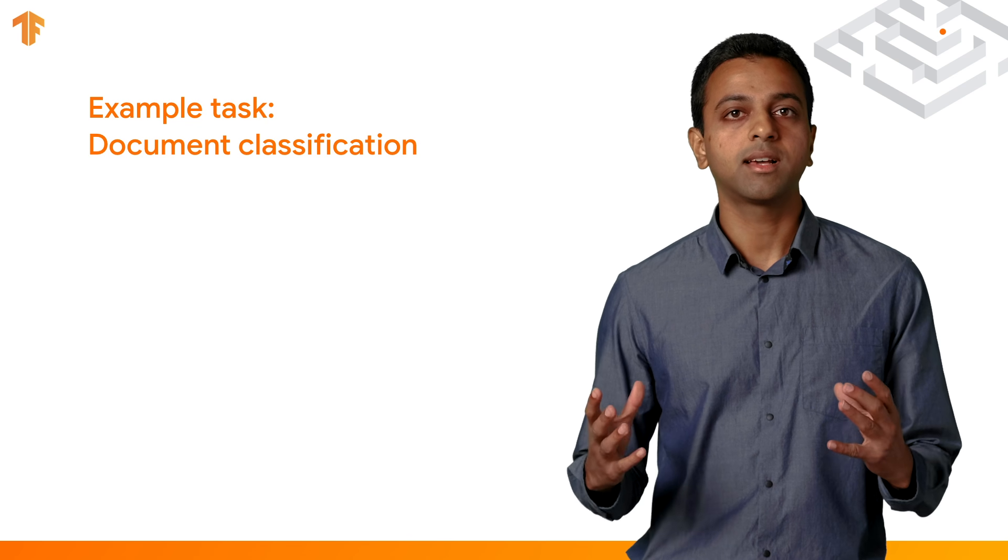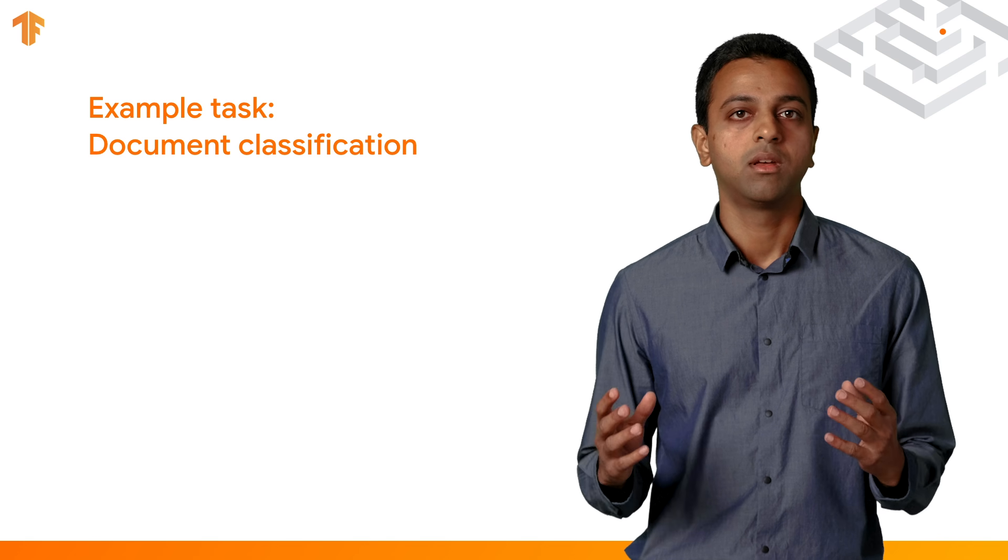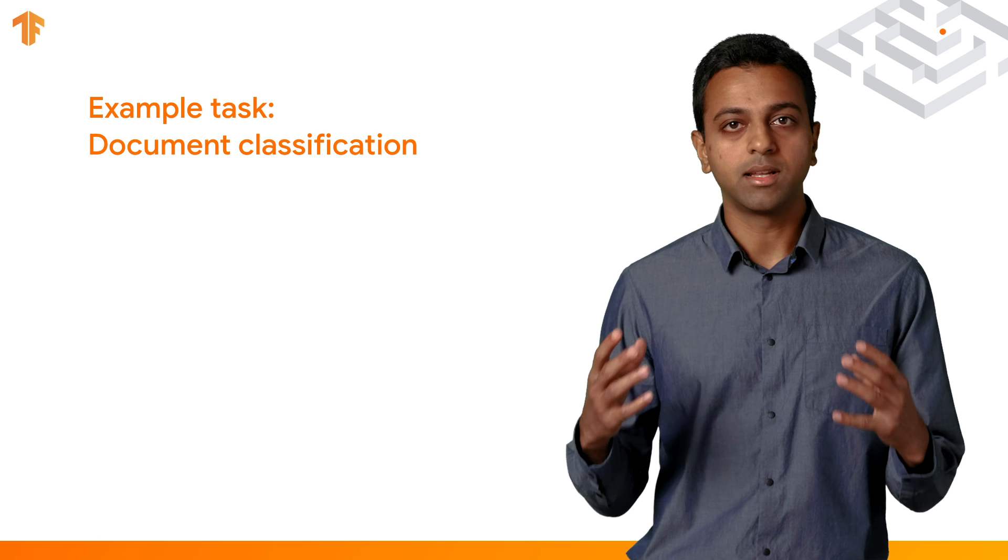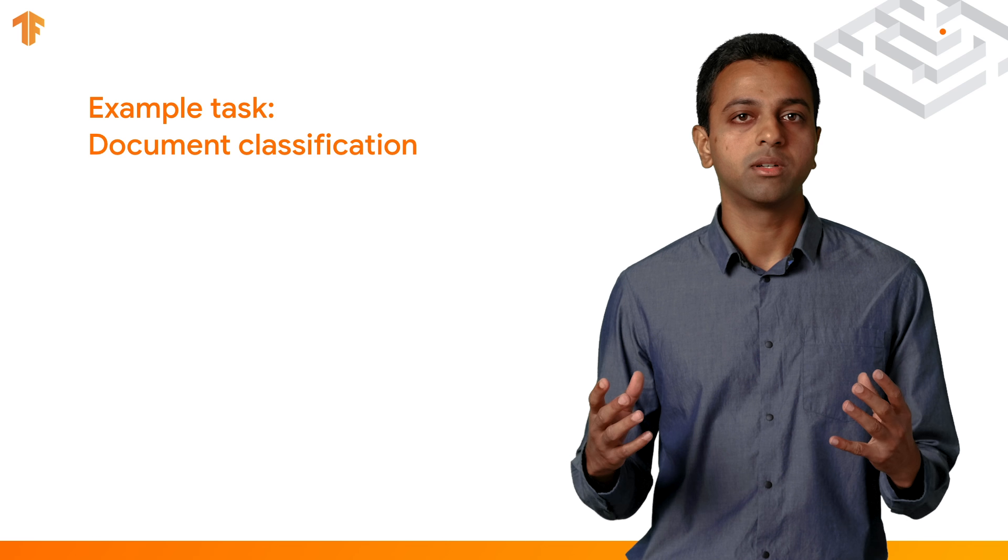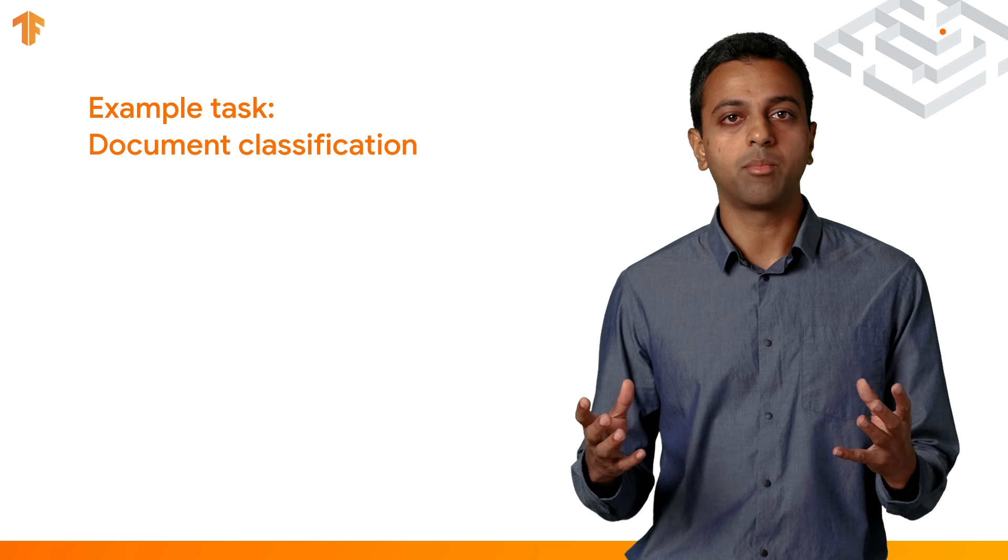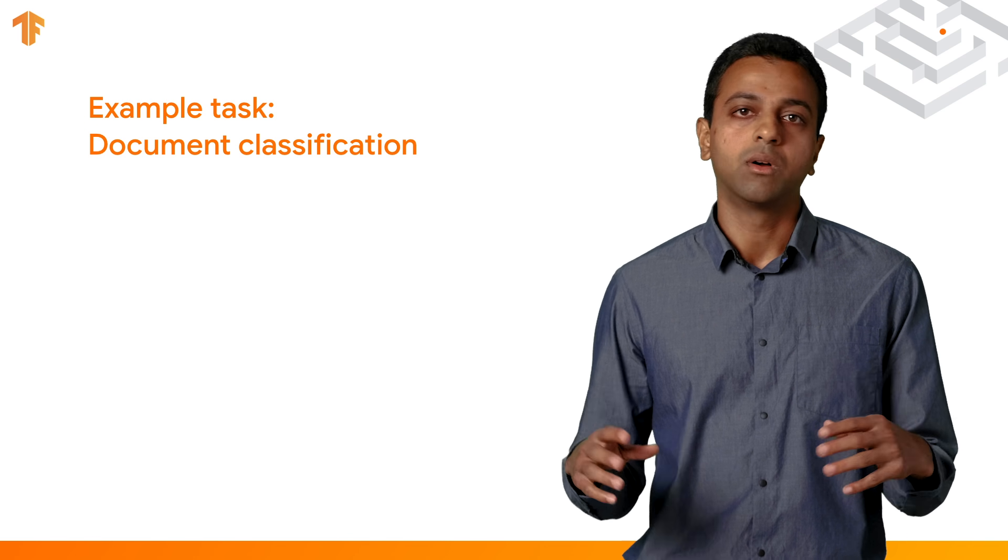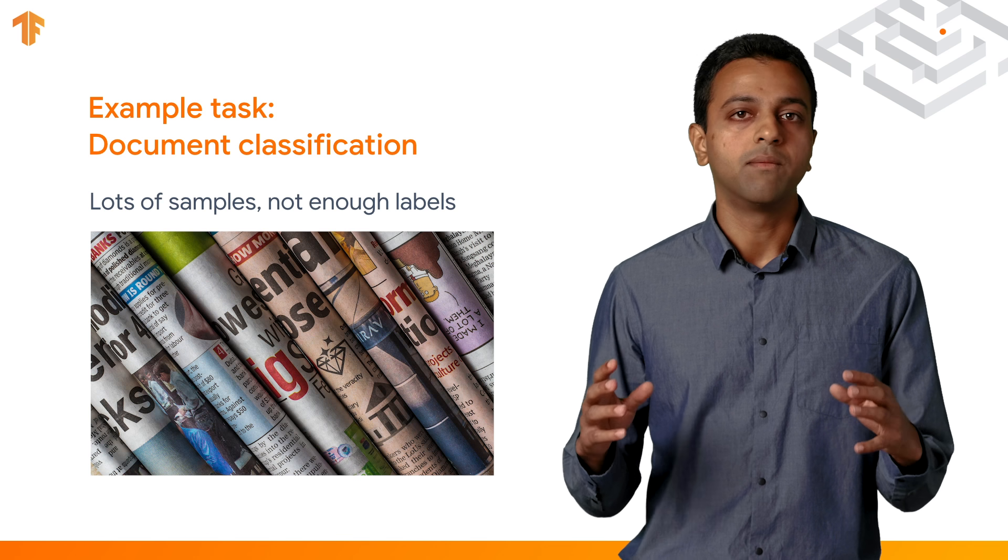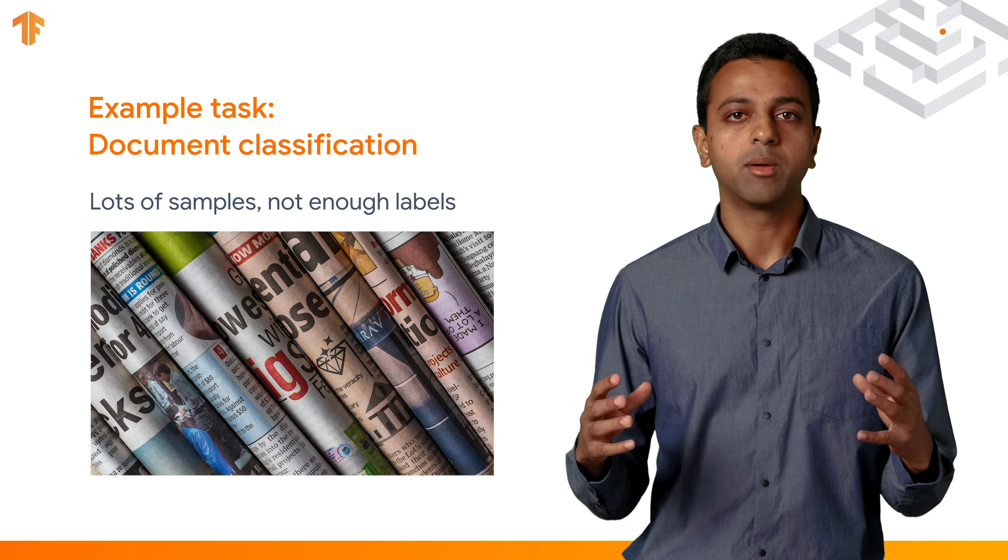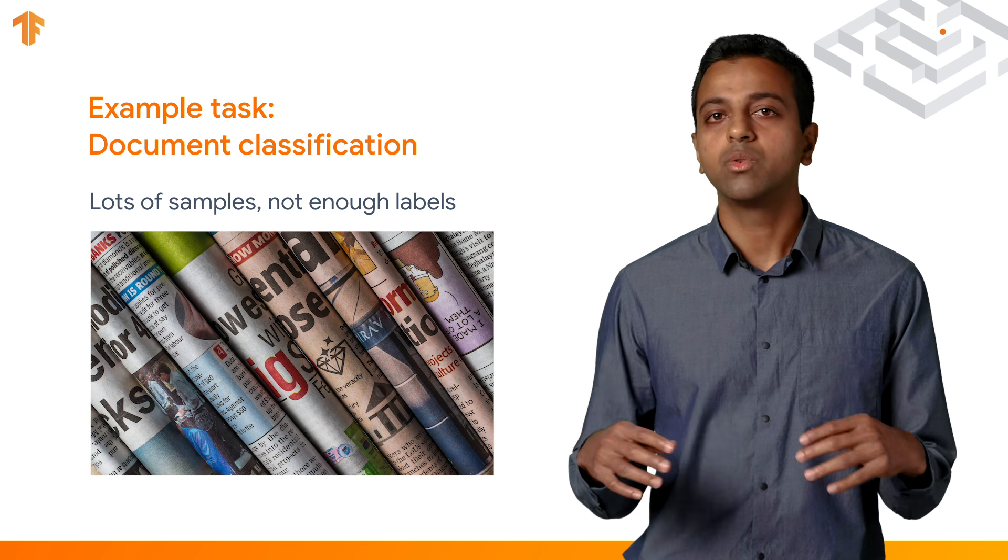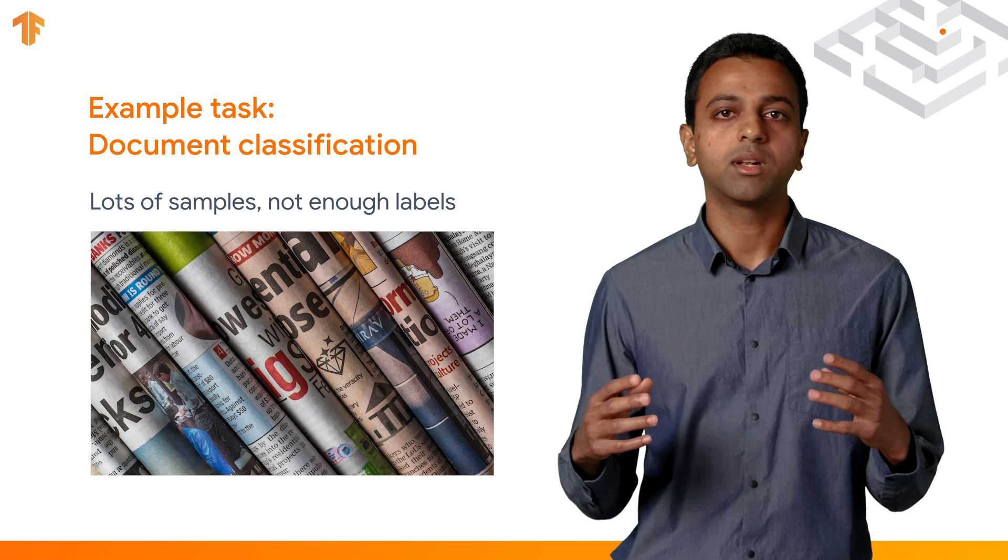Consider the task of document classification. This is a problem that frequently occurs in a multitude of contexts. As an example, machine learning practitioners might be interested in categorizing machine learning papers based on a specific topic, such as computer vision or natural language processing or even reinforcement learning. And often, we have a lot of these documents or papers to classify, but very few of them have labels. So how can we use Neural Structured Learning to accurately classify them?